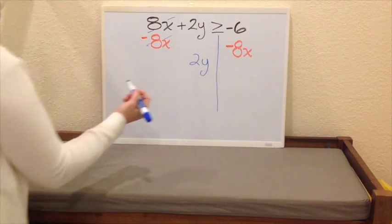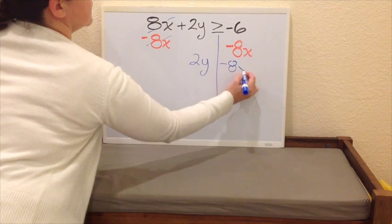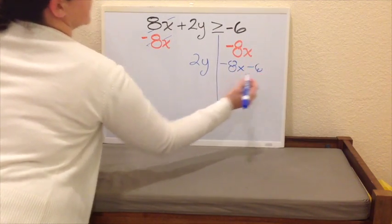Remember, they're not like terms, so we cannot combine them. We're just going to leave negative 8x and negative 6 next to it.